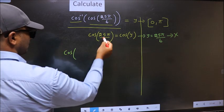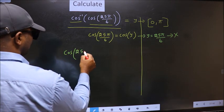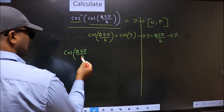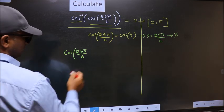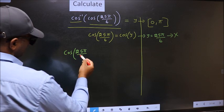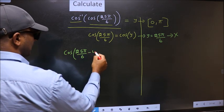Cos 25 pi by 6 exceeds that interval. So we should decrease it. To decrease I subtract 4 pi.